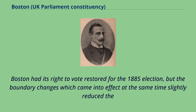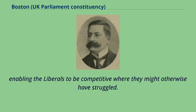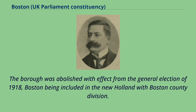Boston had its right to vote restored for the 1885 election, but the boundary changes which came into effect at the same time slightly reduced the size of the borough and allowed it only one MP. The constituency at this period was mainly middle class, but nonconformists had a strong presence, enabling the Liberals to be competitive where they might otherwise have struggled. The deciding factor which may have tilted the constituency towards the Conservatives in its final years may have been the benefit that local fishermen saw in tariff reform. The borough was abolished with effect from the general election of 1918, Boston being included in the new Holland with Boston County Division.